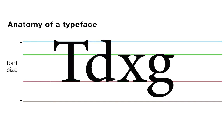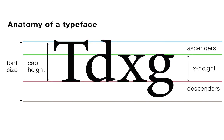We can also measure other aspects of the type. For example, we can look at the height of a capital letter, and that's called the cap height. We can also look at the height of the lowercase letters — on this diagram, that's between the green and the red lines. That's the height of a lowercase x, so it's called the x height. Anything that goes above that green line, higher than a lowercase x, is called an ascender. Anything that goes below the baseline — the red line — is called a descender.